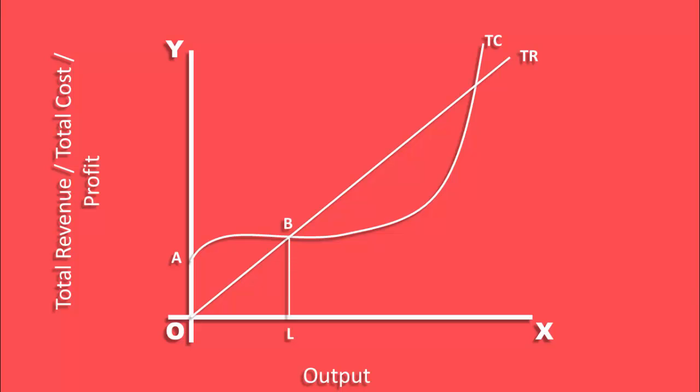When OL output is produced, total cost is equal to total revenue. Total cost is LB. Total revenue is also LB.